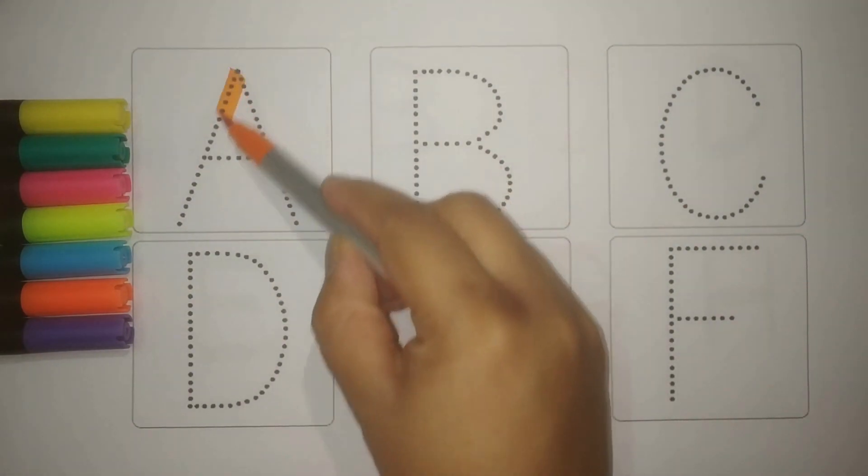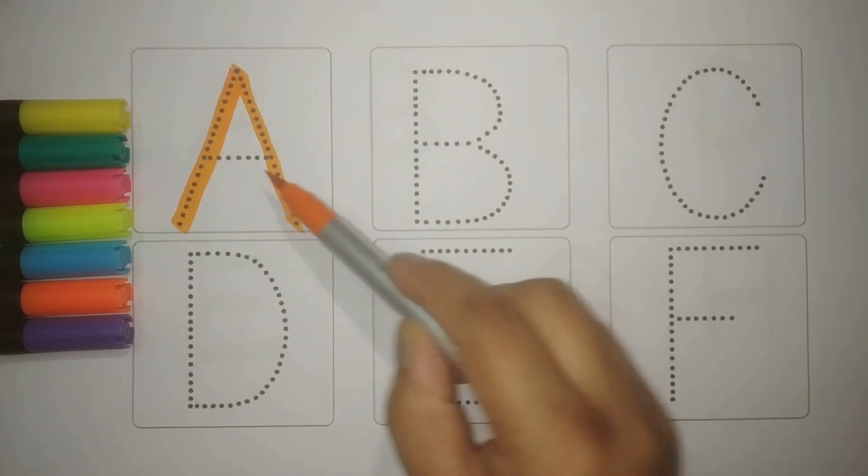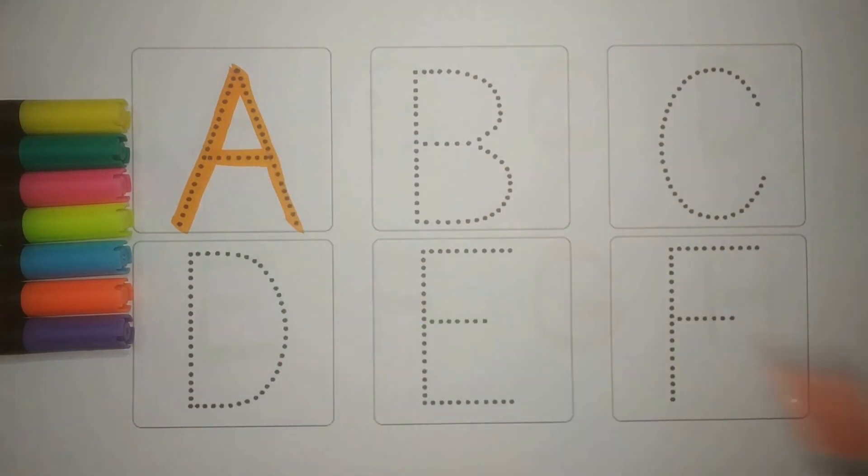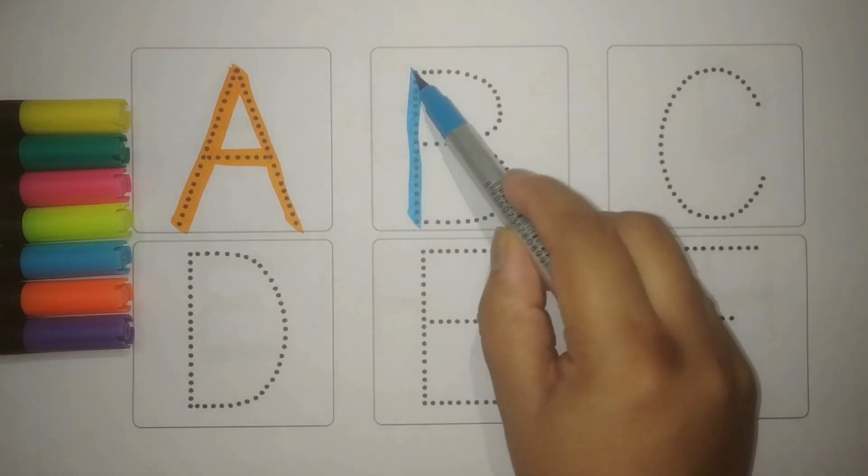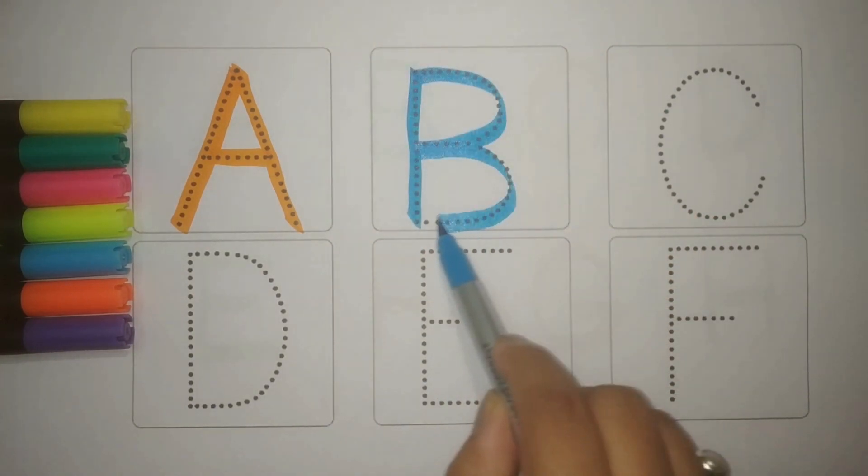Orange A. A for Apple. An Apple a day keeps the doctor away. Blue B. B for Ball. Do you play with the ball?